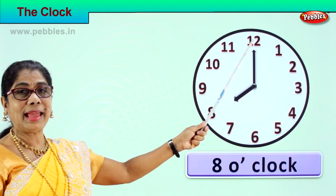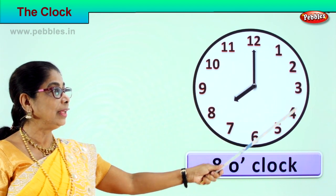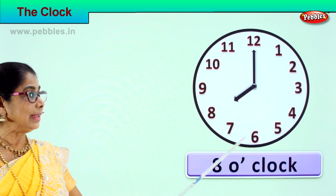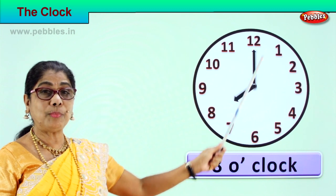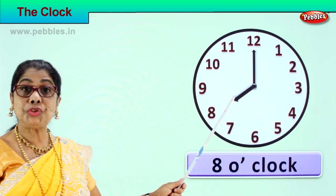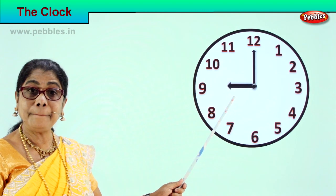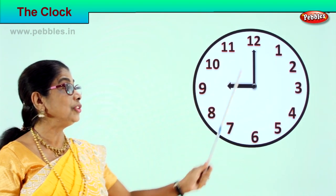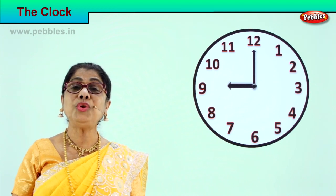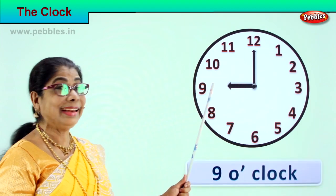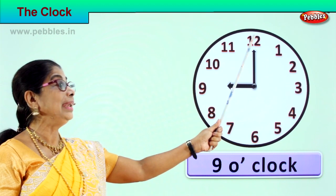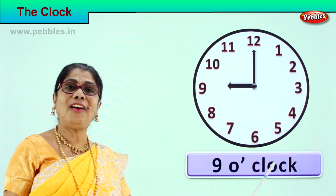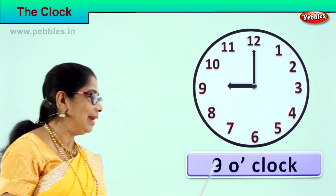Now the minute hand goes from one, two, three, four, five, six, seven, eight, nine, ten, eleven, twelve — it comes back to twelve, and the hour hand shifts from eight to nine. Look at the position of the clock. What is the time? How do you read it? You read it as nine o'clock, because the hour hand is on nine and the minute hand is on twelve. Nine o'clock.